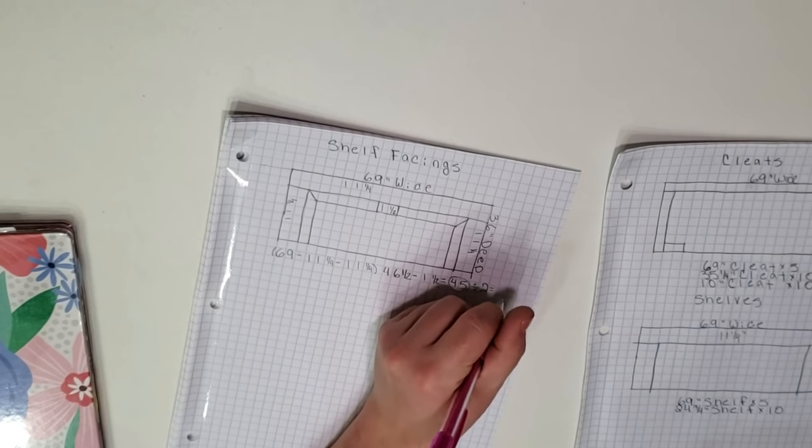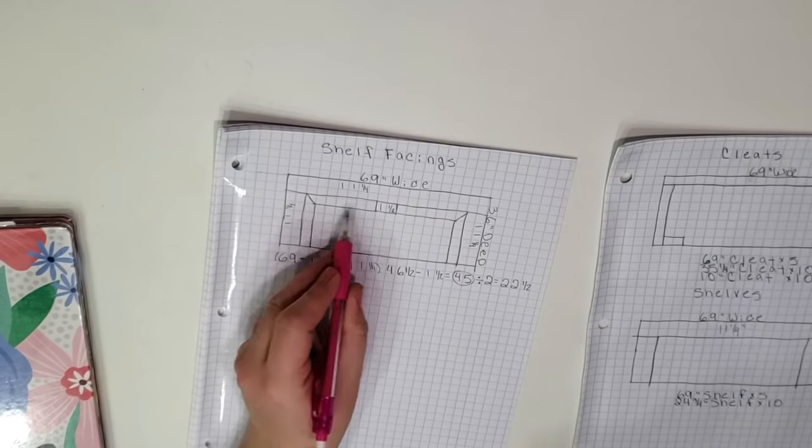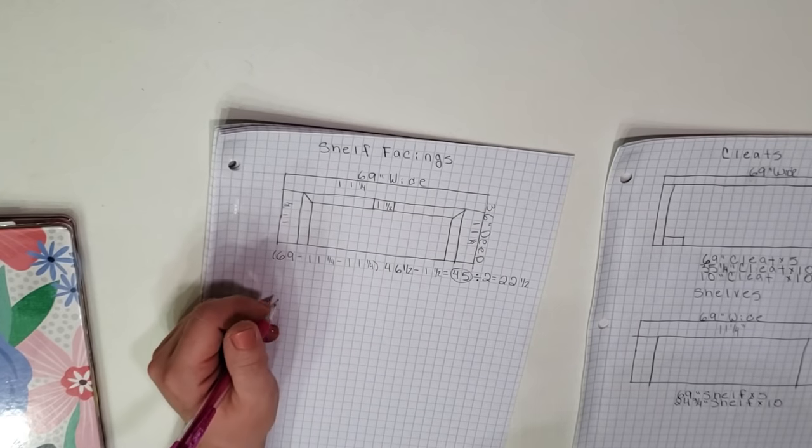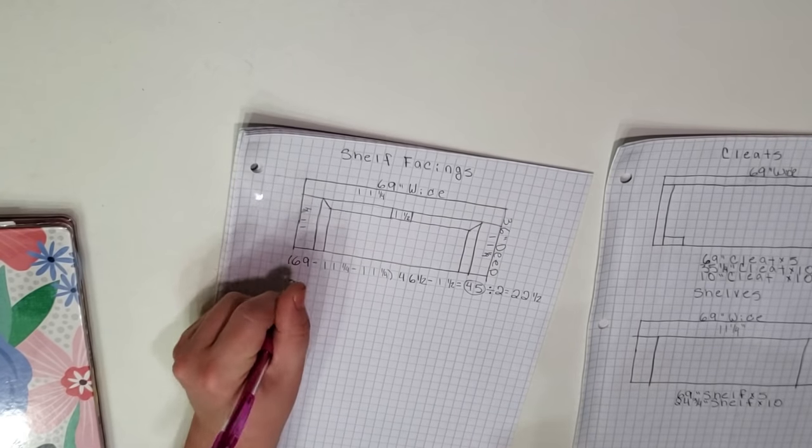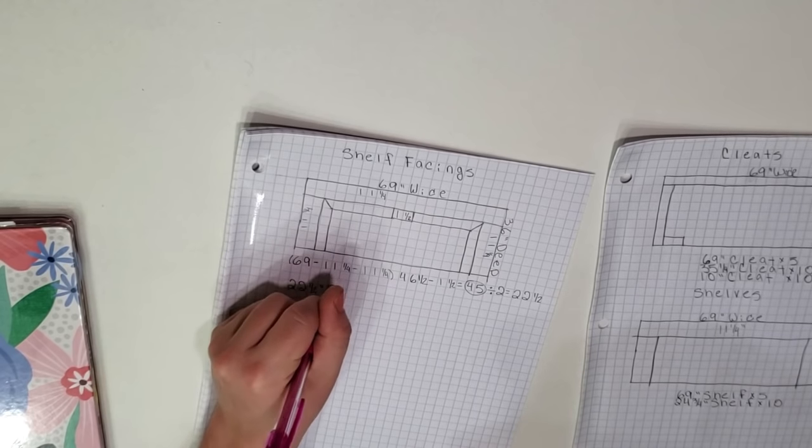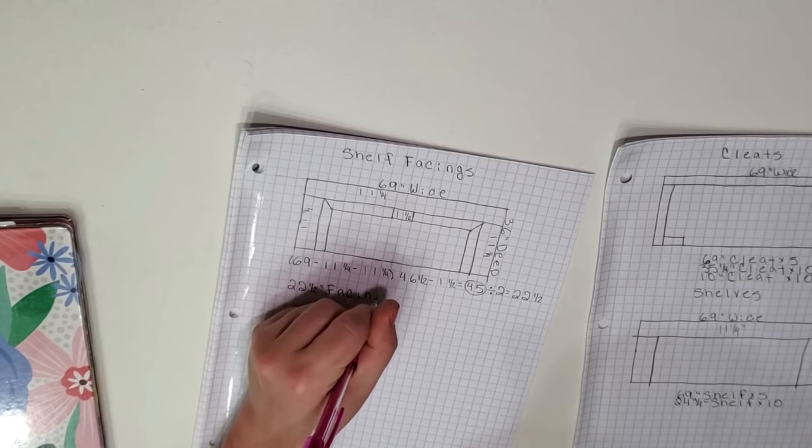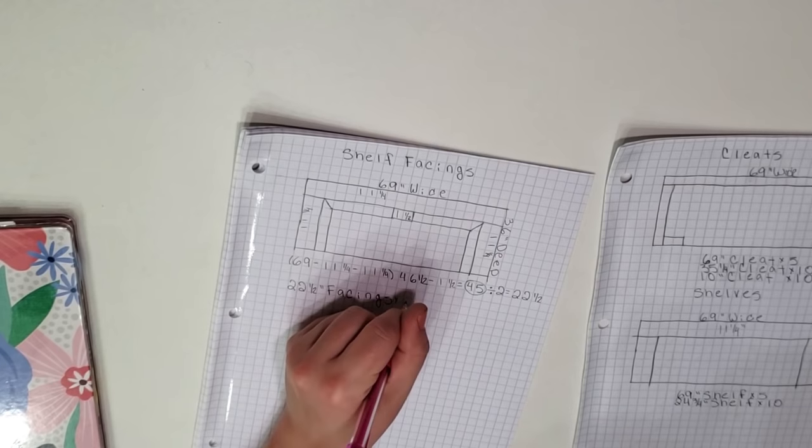I will divide that by two to go on either side of that middle support bar and that's how I come up with the 22 and a half inch pieces that will be the shelf facing on either side of the support bar.